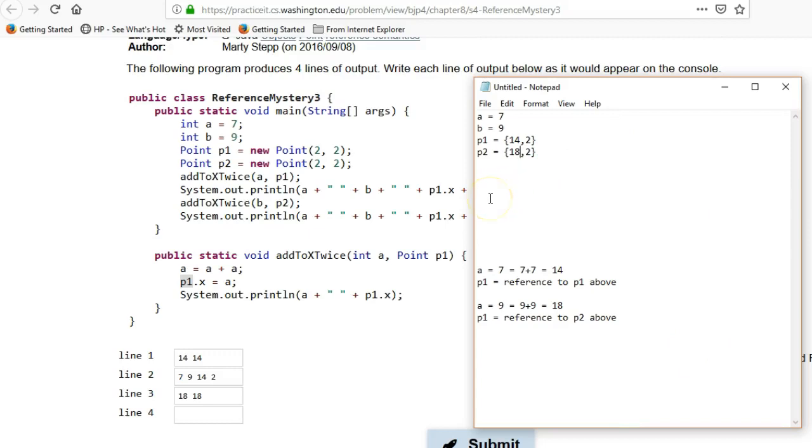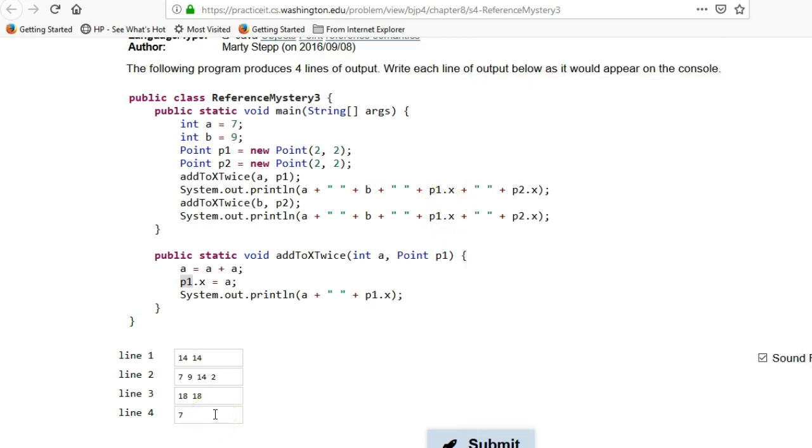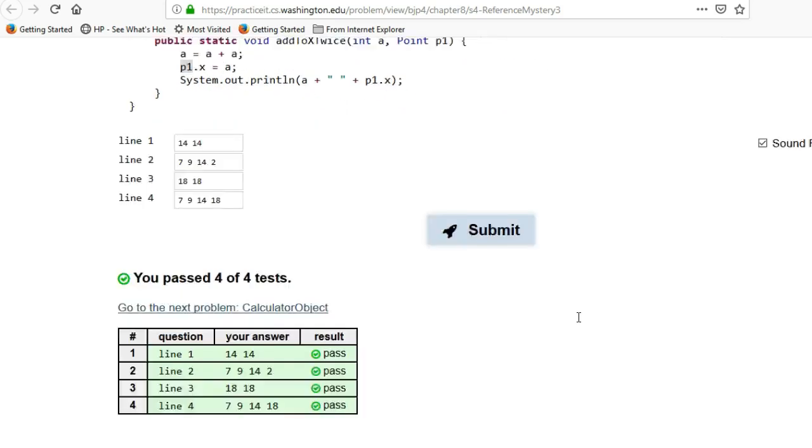Let's go back. So now we have, we've executed here, and now we've executed here, and finally we're going to print out the values of a, b, p1.x, and p2.x. So now a is still 7, b is still 9, but now p1.x and p2.x are 14 and 18. And let's just double check. Yep, that works.